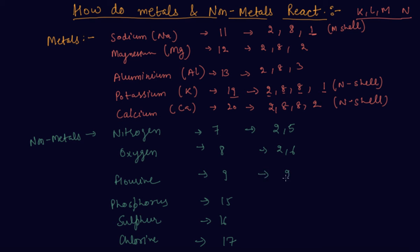Nitrogen is 2, 5. Oxygen is 2, 6. Fluorine 2, 7. Phosphorus 2, 8, 5. Sulfur is 2, 8, 6. Chlorine is 2, 8, 7. Now we will check how the reaction takes place.